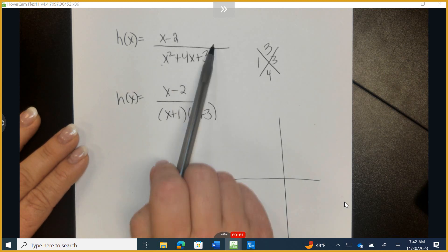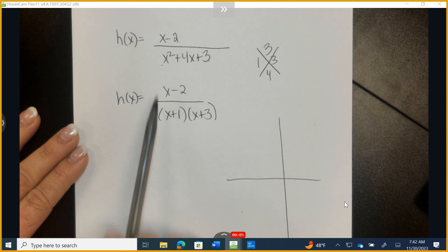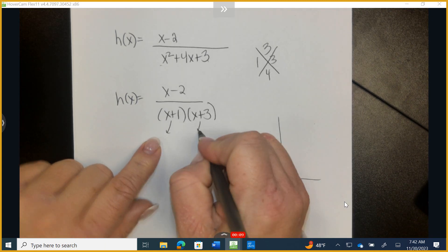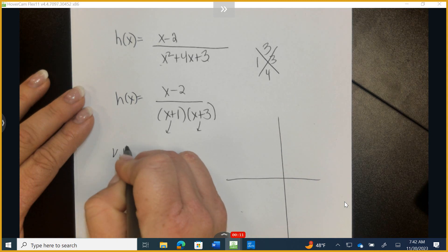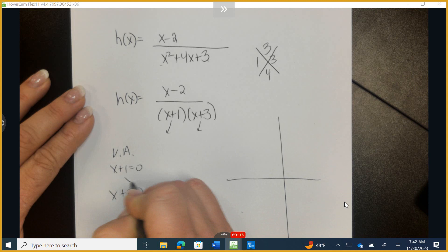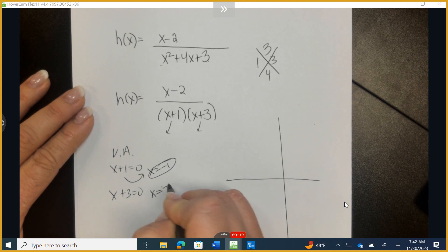So this is the problem, and I've rewritten the denominator in factored form. Now I can tell that if I set each one of these quantities equal to 0, I get vertical asymptotes of -1 and -3.